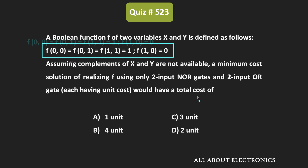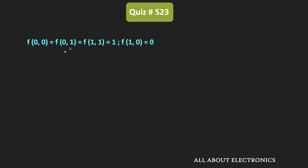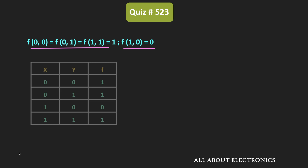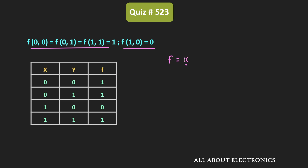This function is equal to 1 for three input combinations. Whenever x is 1 and y is 0, the output of the function is equal to 0. If we see the same thing in the truth table, then from the truth table we can say that f equals x̄ȳ + x̄y + xy, and f̄ is equal to xy̅.